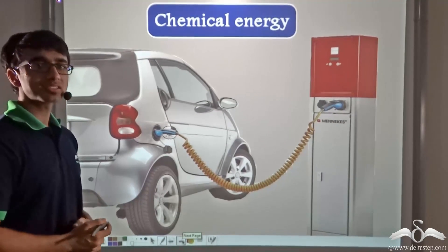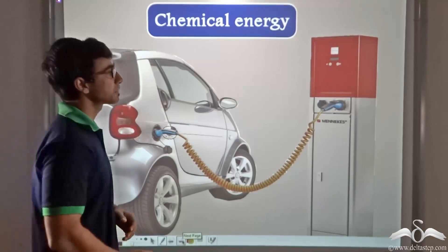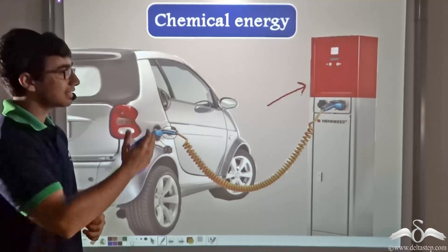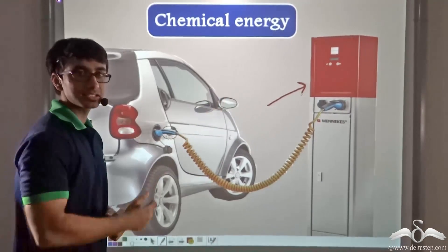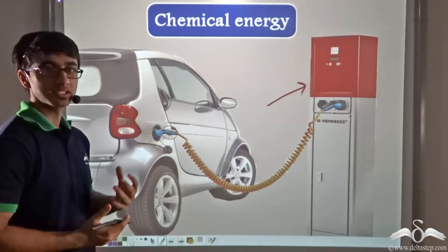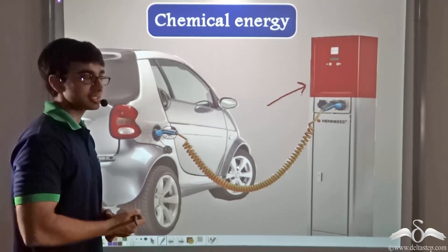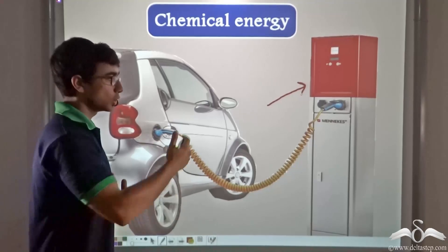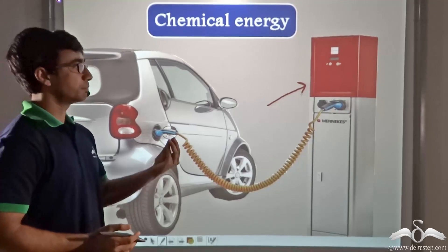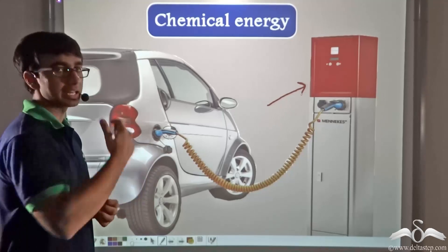When your dad drives a car, he often goes to a petrol pump. The tanks at a petrol pump contain petrol or diesel, which are fossil fuels containing chemical energy. Because of this chemical energy, once the fuel is transferred to the car, the car is able to move. So petrol, diesel, and other fossil fuels like coal and natural gas all contain chemical energy.